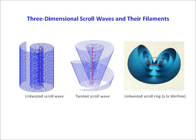A simple case is a scroll ring which is essentially a spiral doughnut. The circular filament loop of such scroll rings tends to shrink and collapse.